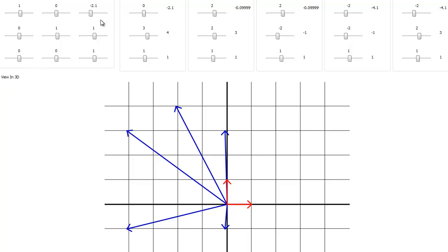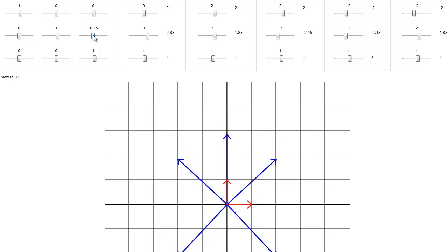If I grab this Z coordinate of this top vertex and I bring it out to a 10, notice nothing changes. If I go negative 10, nothing changes. Nothing will change.